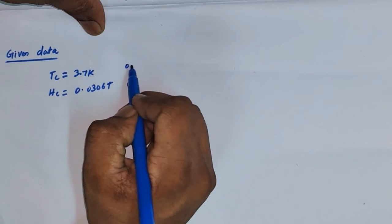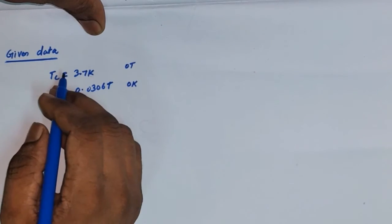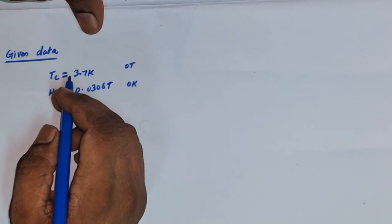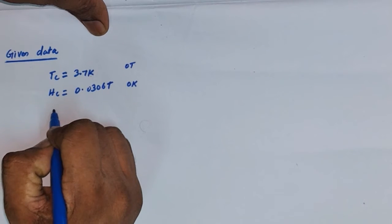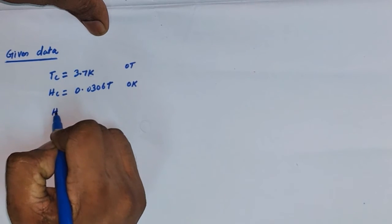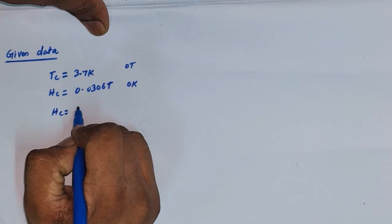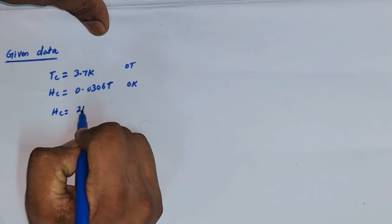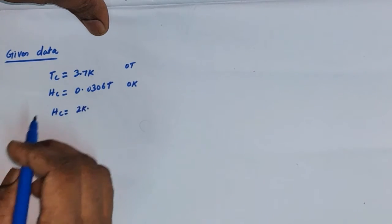At 0 kelvin, the critical magnetic field is 0.0306 tesla. We need to find the critical field at 2 kelvin — that is, what is H_c at T equal to 2 kelvin? This is what the problem is asking.